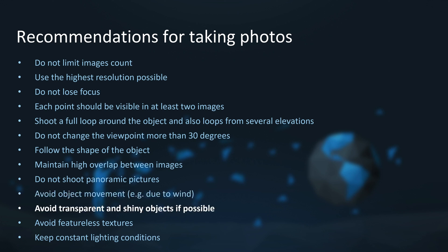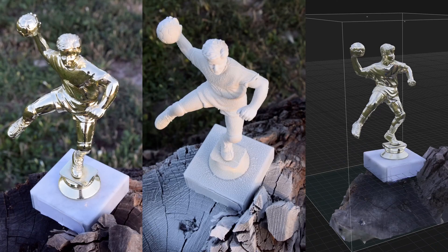Avoid transparent and shiny objects if possible — this is the main disadvantage of photogrammetry. However, there are tips and tricks. For example, you can shoot two sets of photographs: one with the shiny surface for creating the texture, and one with the surface coated with a spray for alignment and reconstruction. Bear in mind that reflections from the environment will be baked into the texture. A small shiny statue was photographed without coating and then with coating — RealityCapture found enough similar features to align both sets together. Images with the uncoated object were disabled for meshing but enabled for texturing, while the coated images were used for meshing and disabled for texturing.